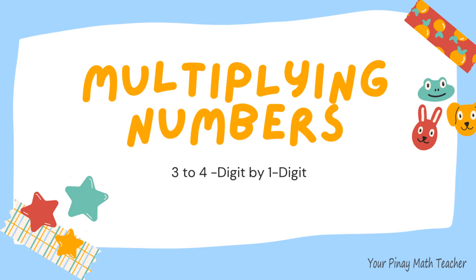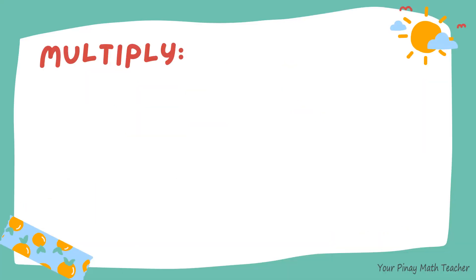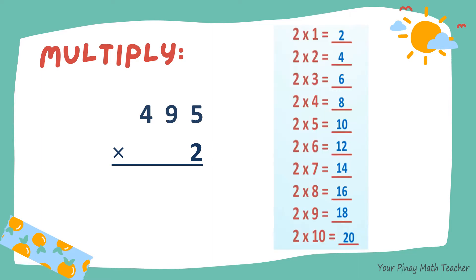How to multiply 3 to 4-digit numbers by 1-digit multiplier? Example, 495 times 2. I'm going to show you the times table of 2 for familiarity and guidance as we go along. Let's start.